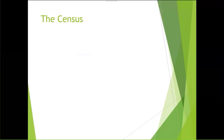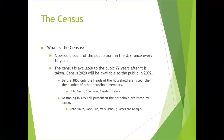So the first place we're going to want to look is the census. What is the census? It's a count of the population that happens once every 10 years in the United States. The census is available to the public 72 years after it is taken. So for instance, this year we're taking a census — it will not be available to the public until the year 2092.